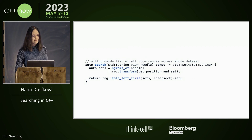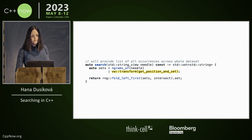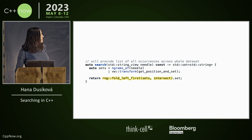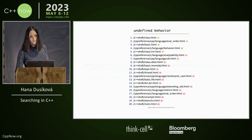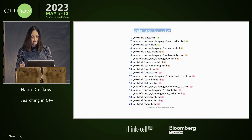And then you have the search function, which will take needle as a string_view, compute ngrams of needle, transform it into the position and set. And then you just fold it from the left — all the sets via the intersection function — take the set from it, and you have the search algorithm done. And you can search it for undefined behavior, like this, or you can search it for whatever you want.